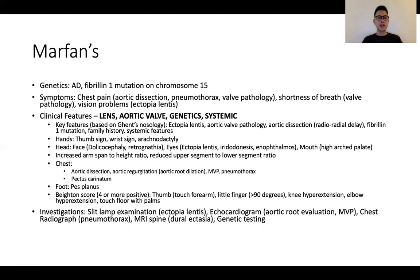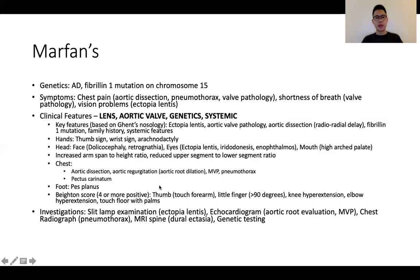In terms of signs seen in the hands, the thumb sign, wrist sign, and arachnodactyly are generally features of hyperlaxity. Other features would include dolichocephaly and retrognathia. In the eyes, one may see features such as ectopia lentis, enophthalmos, and iridodonesis, characterized by iris movements on attempted eye movement. Other features include a high arched palate, increased arm span to height ratio, and pes planus. The Beighton score can also be calculated to establish hyperlaxity.